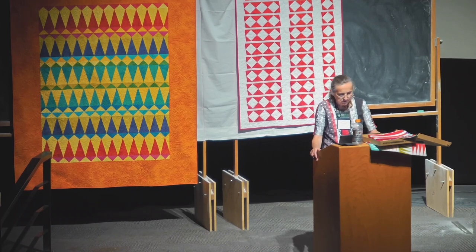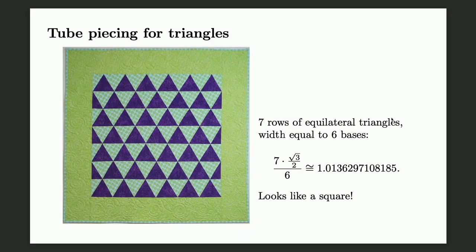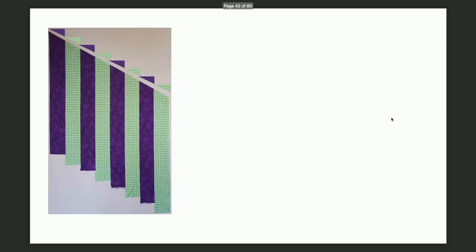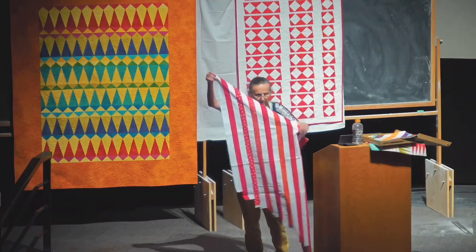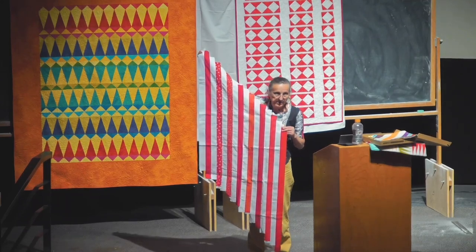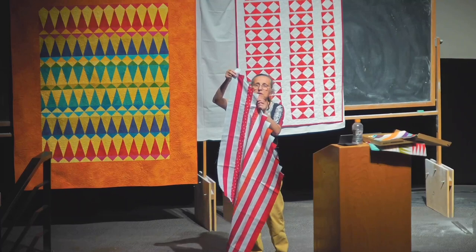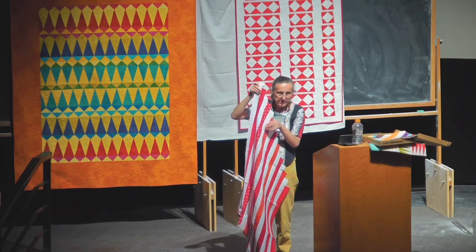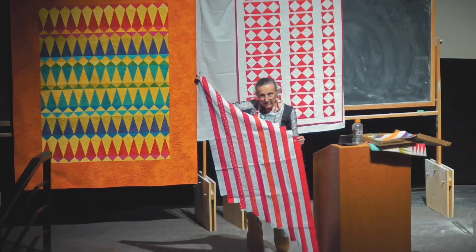Let's work through a quilt of triangles: seven rows of equilateral triangles, width equal to six spaces. The proportion of height to width is just about one — pretty much a square, though with human error. We start with a strip set — I brought one here in case you want to see one in person. When you sew strips together, some strips are longer than others, so the other side doesn't necessarily correspond. At the top, the shift is: take the width of your strip, subtract double seam allowance, then multiply by the cotangent of the tip angle.